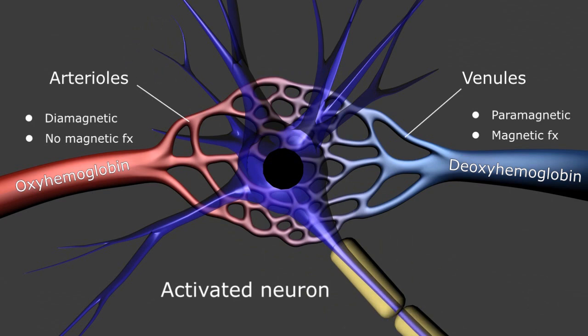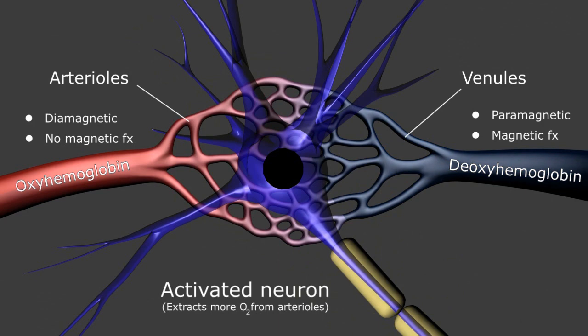When the neuron activates, immediately the cell extracts more of the available oxygen from the capillaries, leaving a higher percentage of deoxyhemoglobin in the downstream venule.